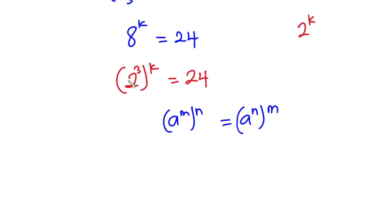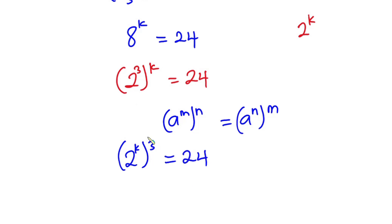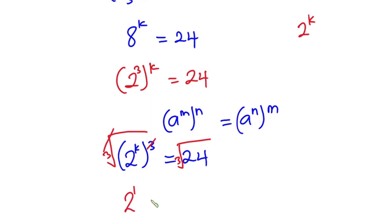I will interchange 3 and k, giving us 2^k all to the power 3, equal to 24. Since we are looking for 2^k, I'll take the cube root on both sides so that the cube cancels, and now we have 2 to the power k is equal to the cube root of 24.